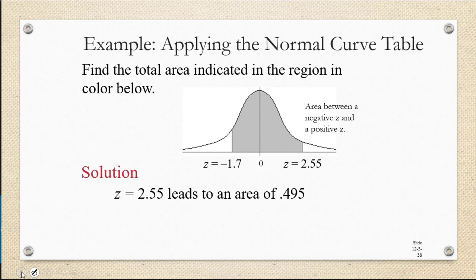If you look up z equals 2.55 on your standard normal table, you should see that to the right of that you get 0.495. As you're watching this video, it's important that you look at the table and check to see that you can find these values. If you look up z equals 1.7, remember there are no negative z-scores, but because of symmetry, we can look up the positive version. If you look up z equals 1.7, you get an area of 0.455.